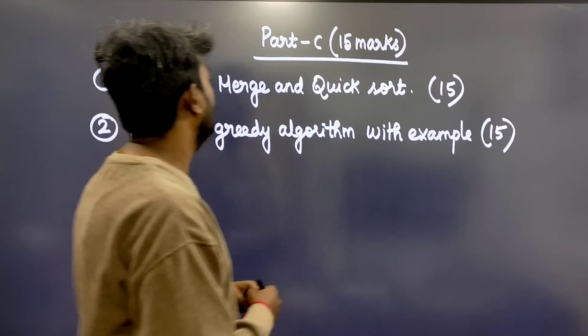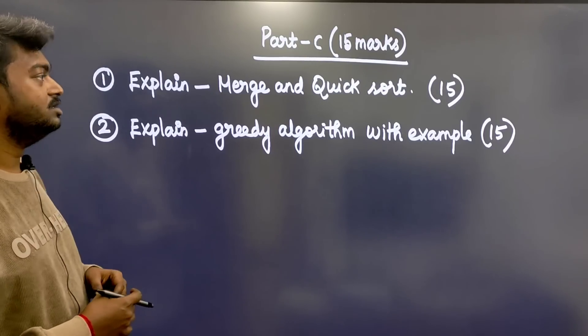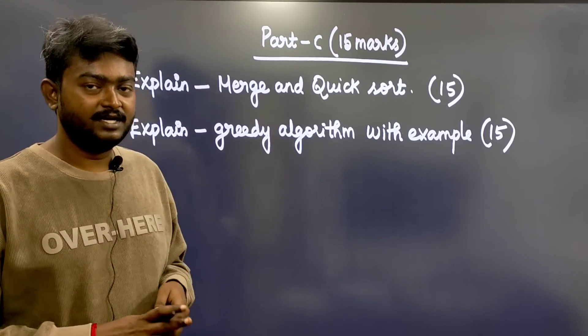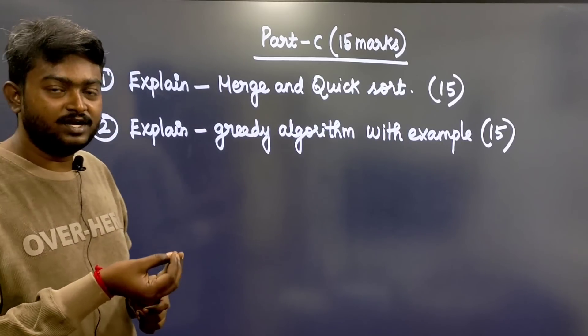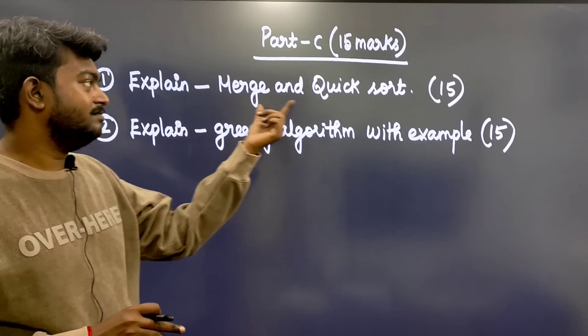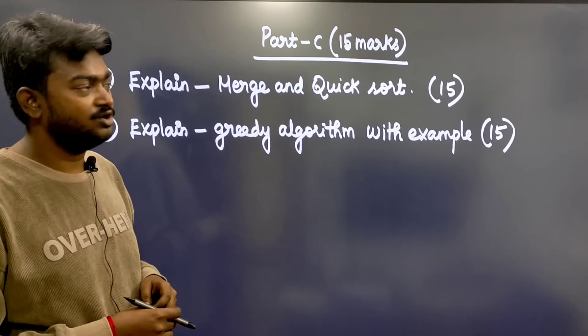Part C, 15 marks: Explain merge sort and quick sort. Explain greedy algorithm with example. First define the concepts, then solve an example. If you explain correctly, you will get full marks. These are the important questions.